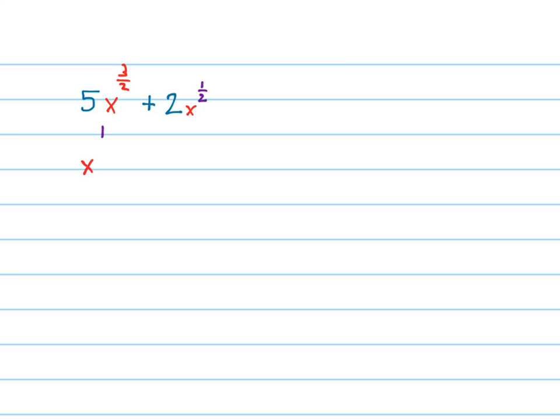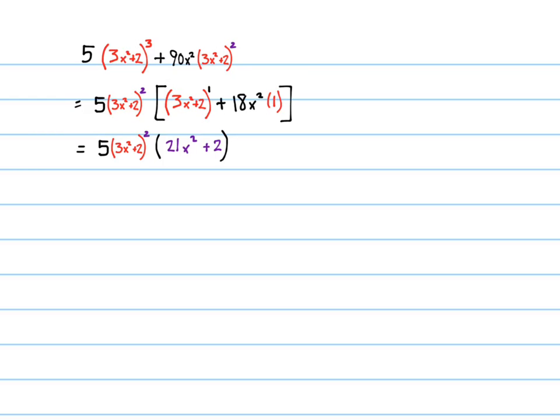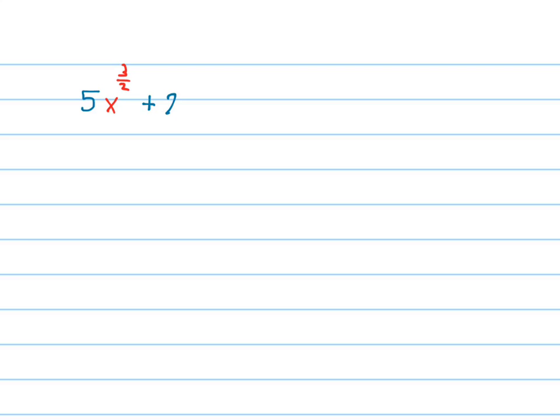Alright, here's another one. This situation is a little bit easier to look at. Here, we can see that the 5 and the 2, nothing in common to factor out of them. But both of these are powers of x. So, as a rule, if you have the smallest power of x, and you choose to factor that from both, you're going to end up with a clean factored expression.